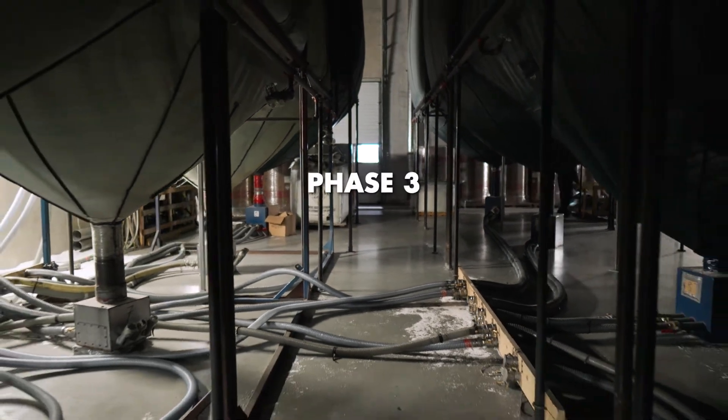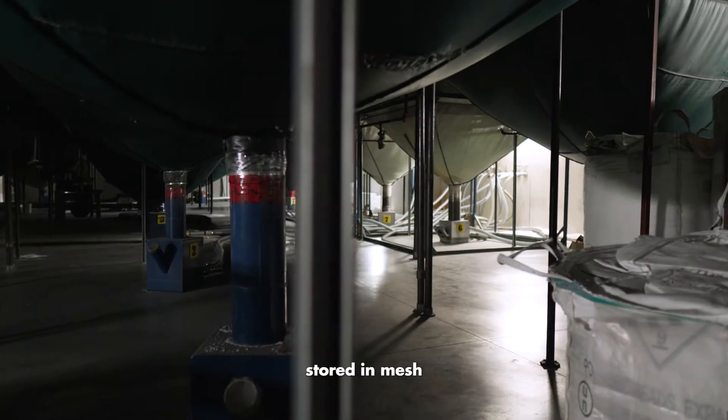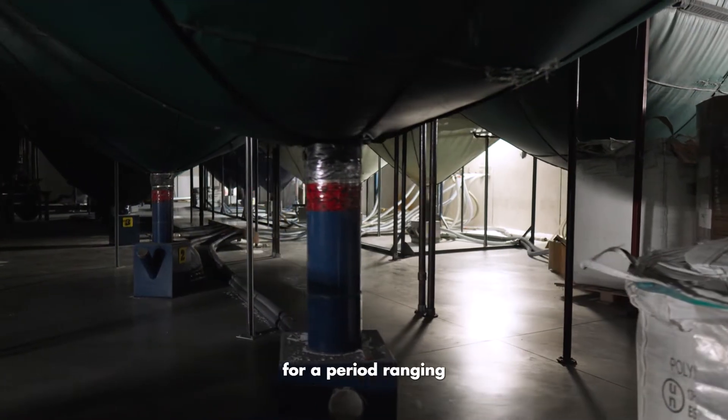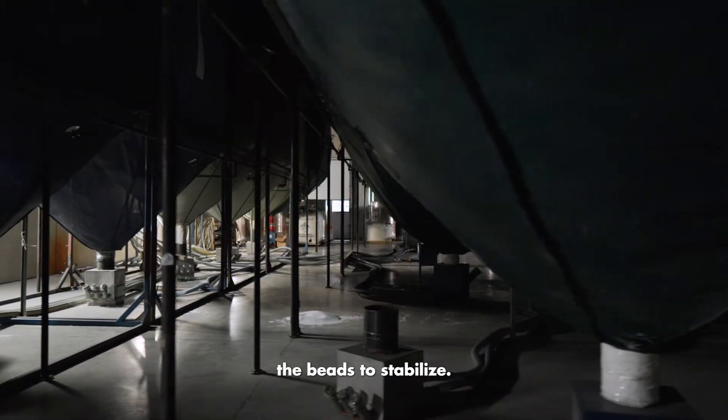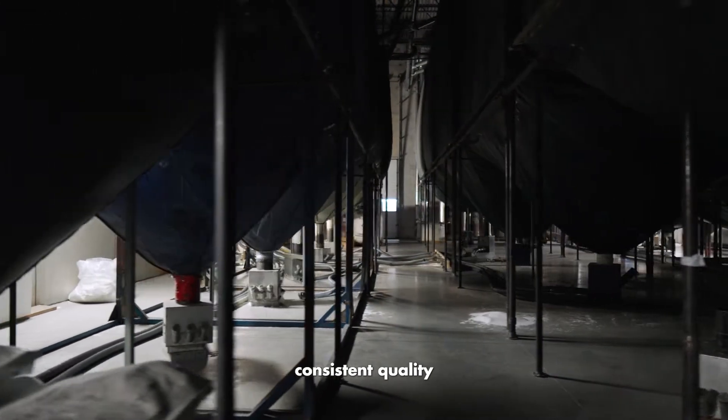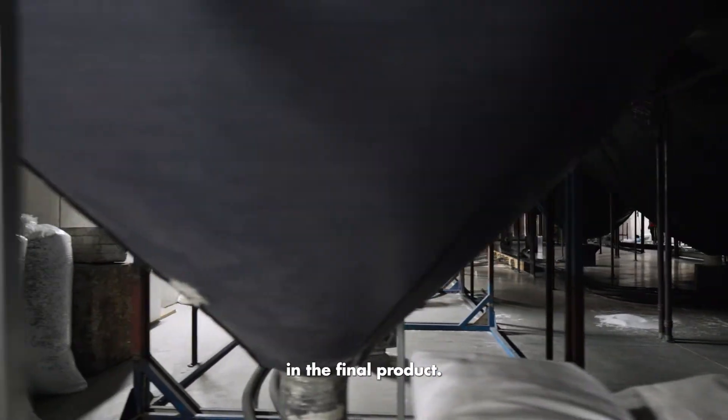Phase three, silo room. The beads are stored in mesh silos for a period ranging from several hours to a few days. This aging allows the beads to stabilize. This process is essential to ensuring consistent quality and density in the final product.